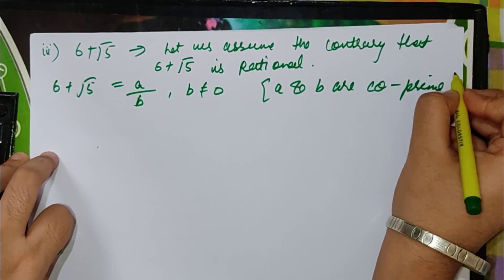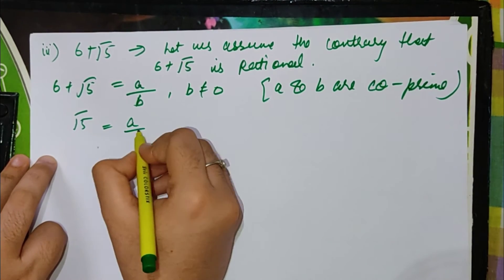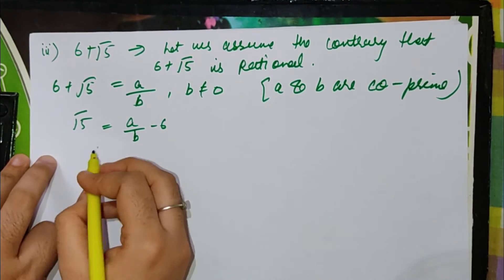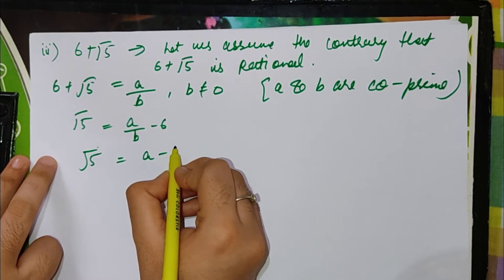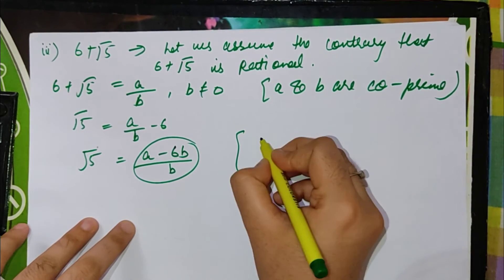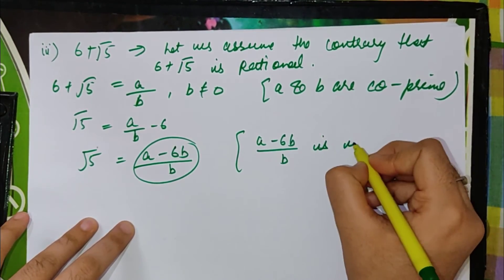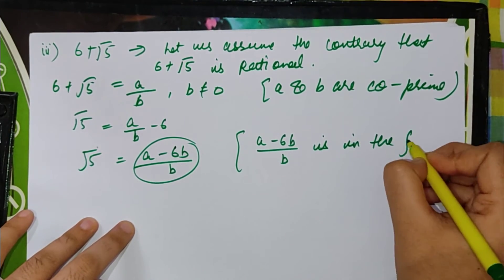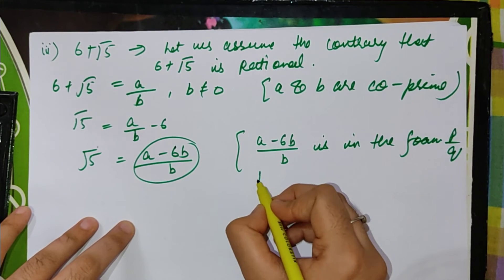Root 5 equals a minus 6b upon b. This is in the form p by q, then it is rational.